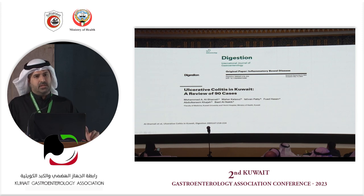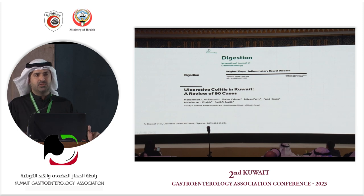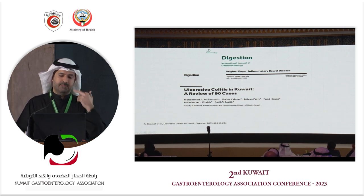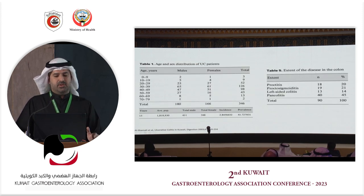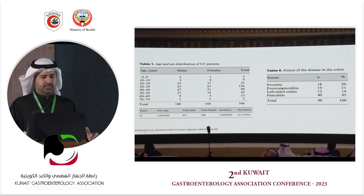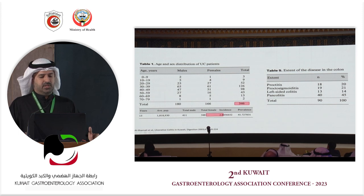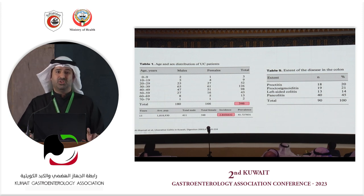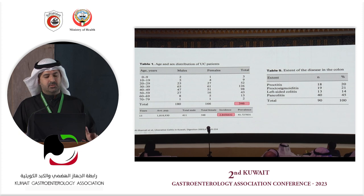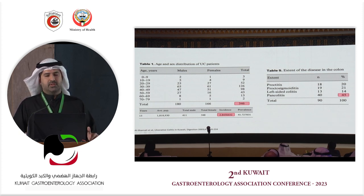Moving to ulcerative colitis: a publication from the Amiri team around 20 years after the initial 1980s study, published by Dr. Shamali's team, looked at 346 UC patients diagnosed over approximately 15 years. The calculated incidence rate was around 2.8 per 100,000 — up from 2.2 twenty years prior — a notable increase. Around half of these patients presented with pancolitis.